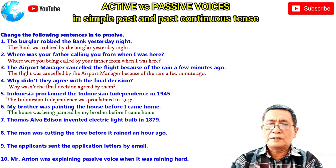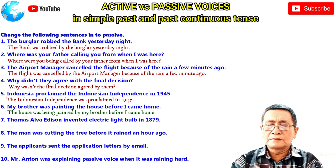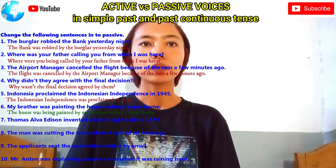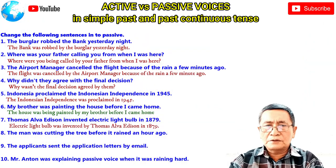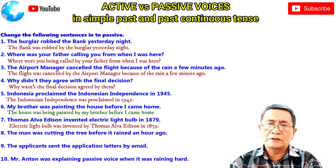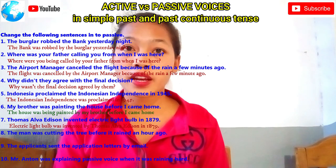Number seven: 'Thomas Alva Edison invented the electric light bulb in 1879.' — Fallon answers: 'The electric light bulb was invented by Thomas Alva Edison in 1879.' Good answer. Number eight: 'The man was cutting the tree before it rained an hour ago.' — Lenta answers: 'The tree was being cut by the man before it rained an hour ago.' Good answer, thank you very much.